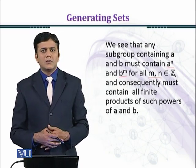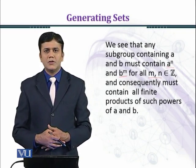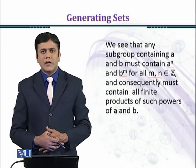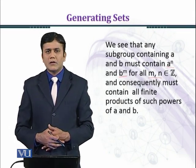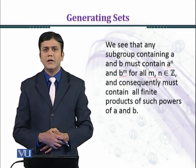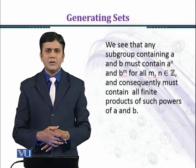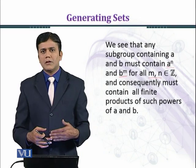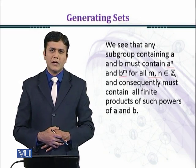اگر G finite ہے تو after a certain number of times A کی powers identity میں چلی جائیں گی۔ اگر A کا order N ہے تو A raised to power N identity element آ جائے گا۔ اگر B کا order M ہے تو B raised to power M identity element آ جائے گا۔ اور ان کے products بھی identity میں convert ہو جائیں گے after making a finite number of products of elements A and B. اگر ہمارے پاس infinite group ہے تو A کی تمام powers، B کی تمام powers اور ان کے تمام products بھی group کے اندر آئیں گے۔